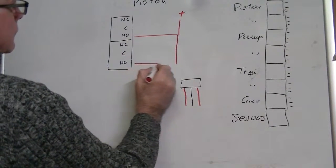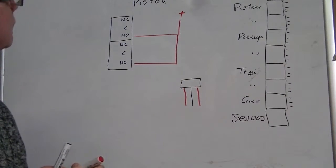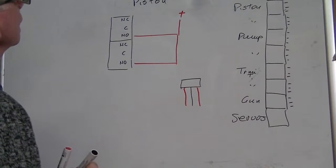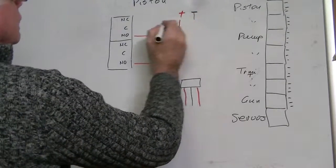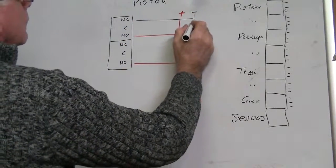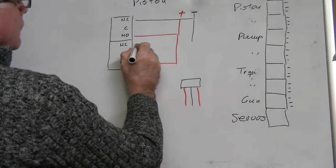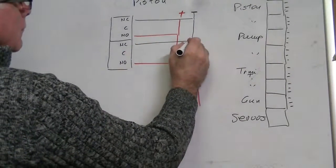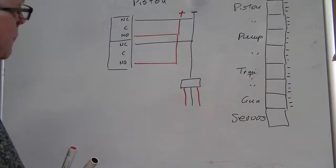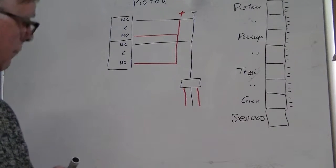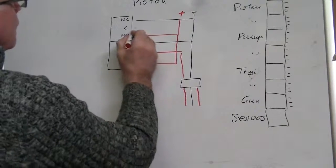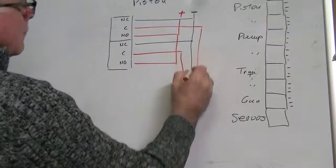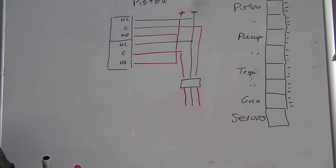So what happens then is that the positive wire, which is the 7.2 volts, goes into the normally open, which means unless the switch is on, nothing's happening. The negative goes into the normally closed and also goes to join the negative on its way to the piston. And then the common just joins to those wires on either side. So that's all there is to wiring up the piston.